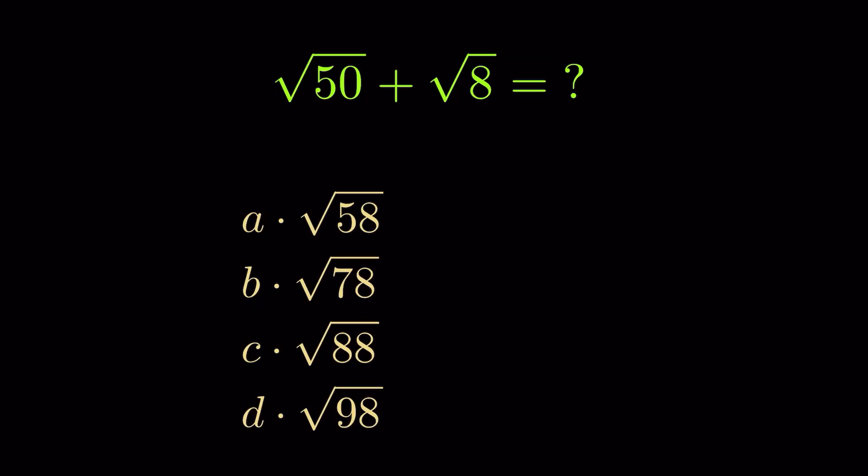Square root of 50 plus square root of 8 equals what? The options are 58 under square root, 78 under square root, 88 under square root, and 98 under square root.